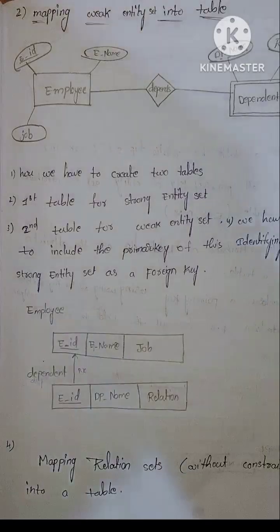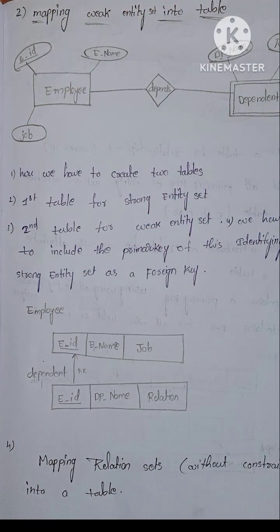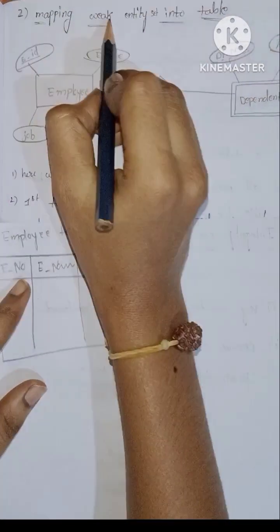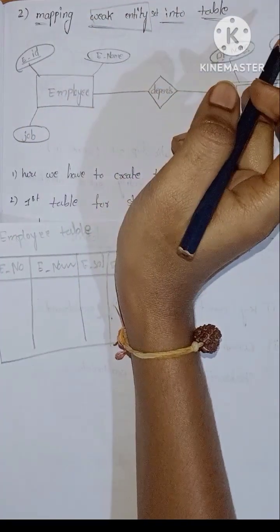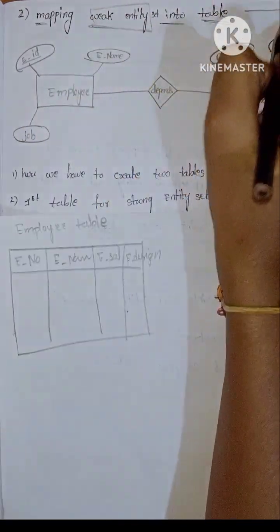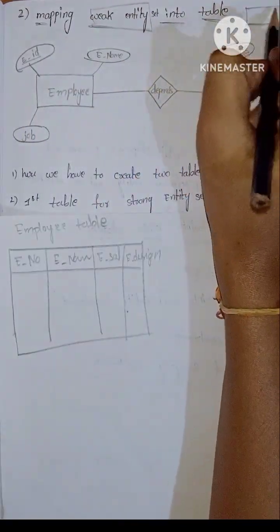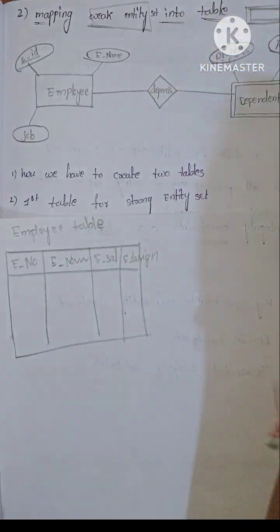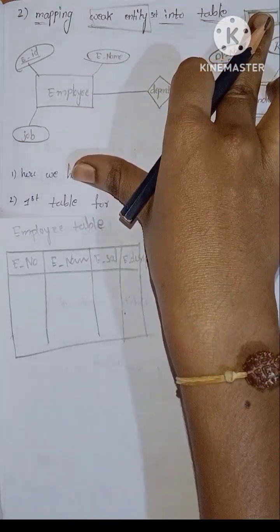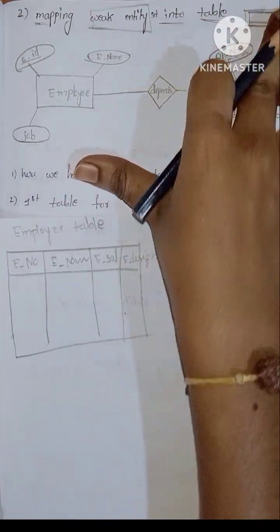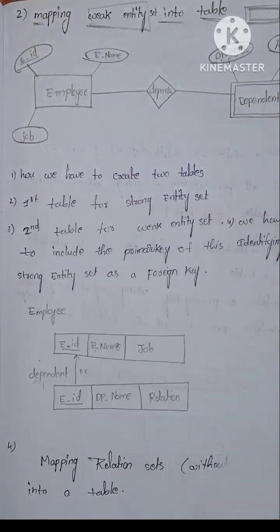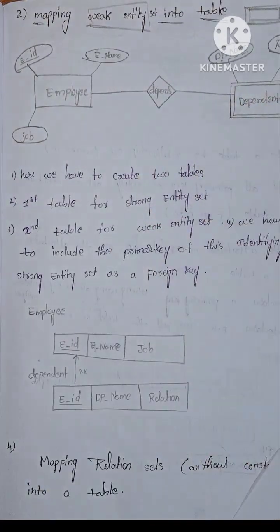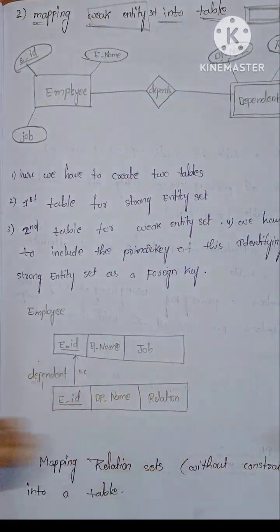Next is the weak entity set into tables — mapping weak entity set. This is the ER representation using a double rectangle shape, which represents the weak entity set.